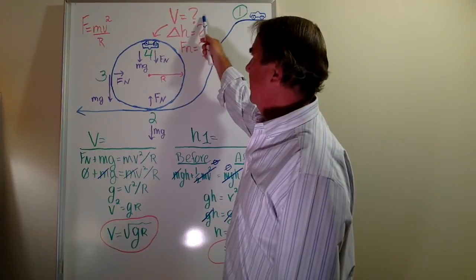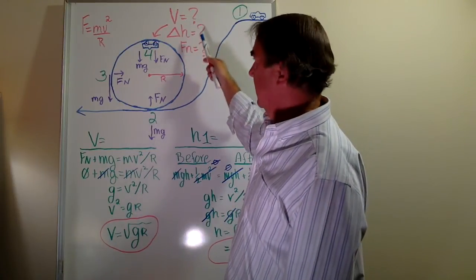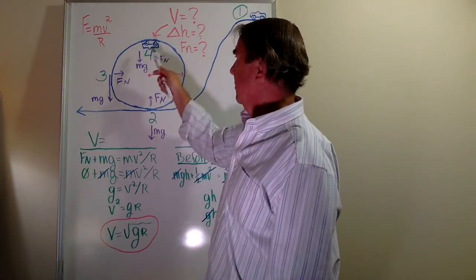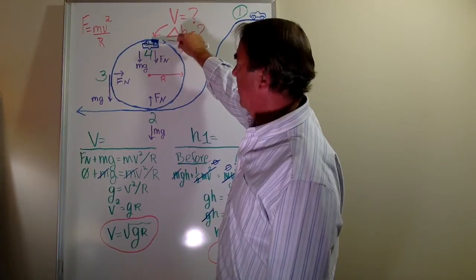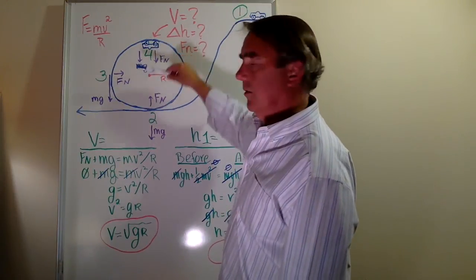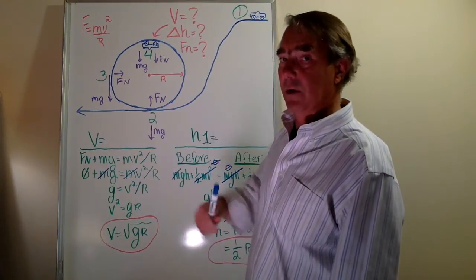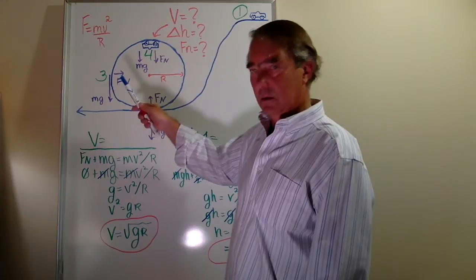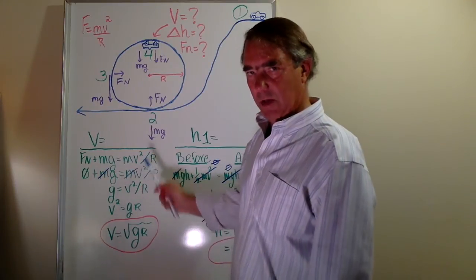The way to answer the question about minimum velocity and initial elevation is to answer the velocity question first and the initial elevation second. At this slowest point of travel, gravity is pointing straight down and towards the center of the circle, so the direction of gravity and centripetal acceleration are both in the same direction directly down. The sum of the forces in the radial direction is: normal force plus mass times gravity equals mass times radial acceleration.